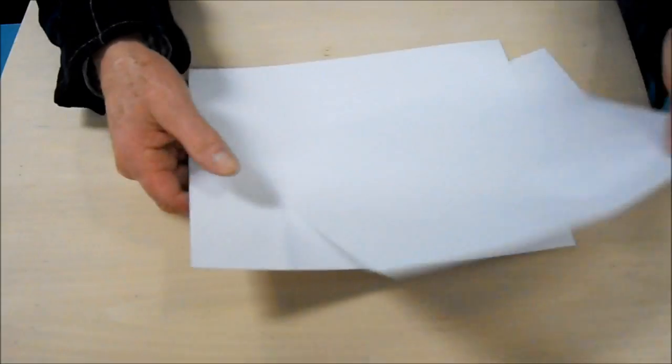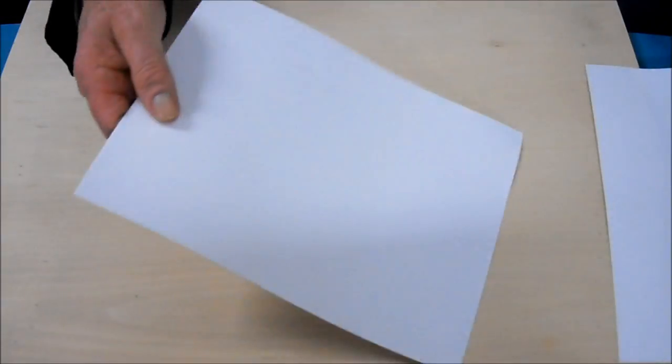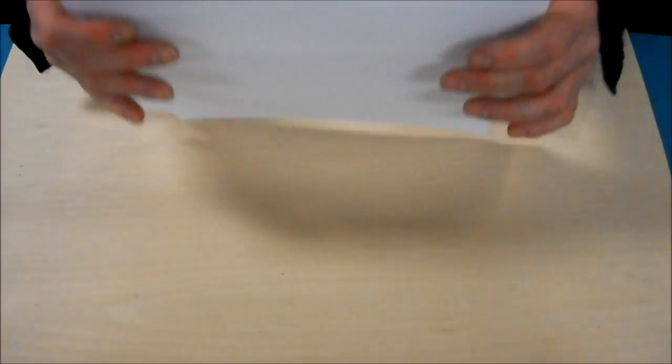We're going to start with two pieces of paper - a piece of index paper, 80-pound index, and some regular bond paper.